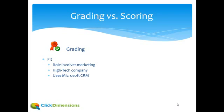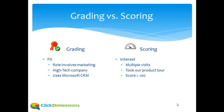Lead grading is all about fit. If somebody's on our site and their role involves marketing, they're with a high tech company and they use Microsoft CRM, that's usually a pretty good fit. Scoring is all about interest — if they're on our site multiple times, if they take our product tour, and if their ClickDimensions lead score is over 100, they're interested.